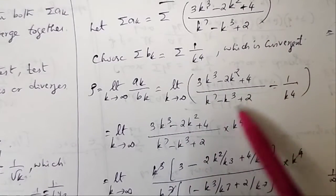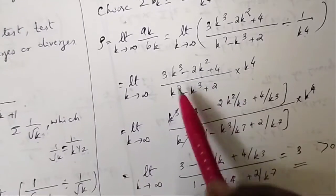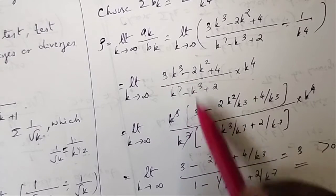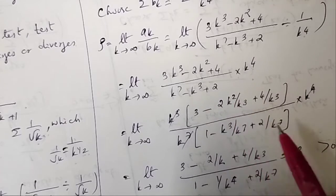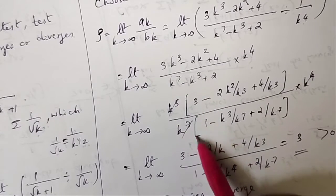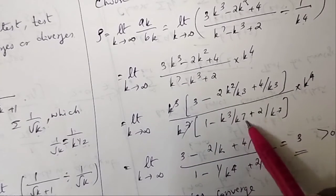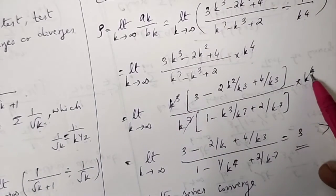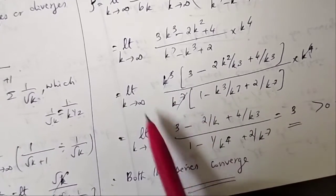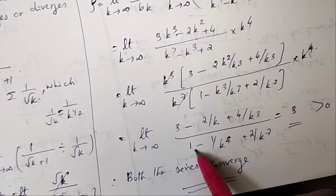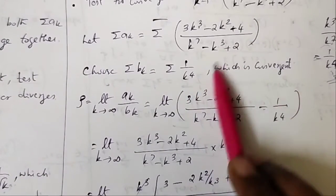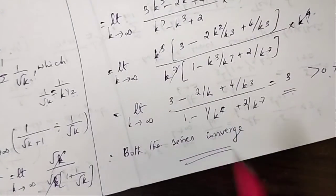Find ρ: limit as k→∞ of [(3k³ - 2k² + 4)/(k⁷ - k³ + 2)] × k⁴. Taking k⁷ common from the denominator and k³ from the numerator and simplifying, as k→∞ the remaining terms vanish, giving ρ = 3. This is finite and positive, so both series behave the same. Since bk is convergent, the given series also converges.